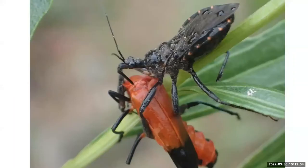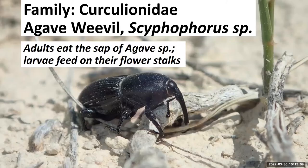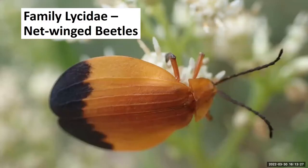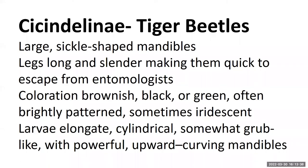Here's one unfortunately getting eaten by a predaceous hemipteran — one of the bee assassins in the Reduviidae group, which has those piercing-sucking mouthparts; soft-bodied beetles make a good lunch. Switching families to the weevil family Curculionidae — the agave weevil, associated with the agave family. They've got that really long snout with chewing mouthparts at the end that allow them to breed within agave plants. Then the family Lycidae — gorgeous beetles, here's a different angle of one on an Opuntia cactus.